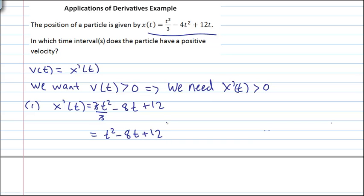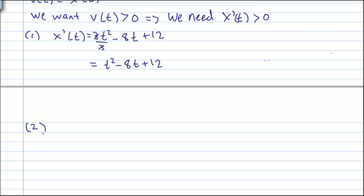And we know that this, since this is x prime of t, which is v of t, this must be greater than 0. So for our second step, we'll set up that inequality. t squared minus 8t plus 12 must be greater than 0.